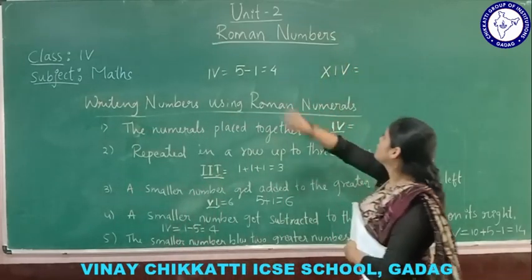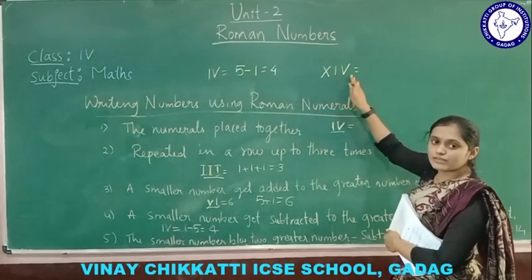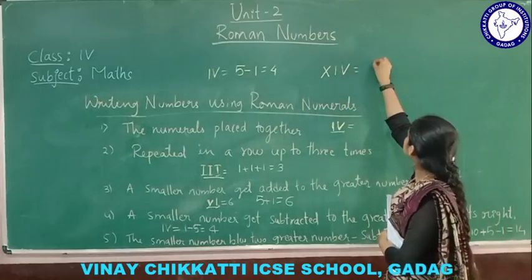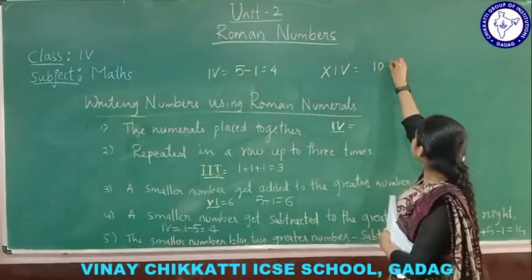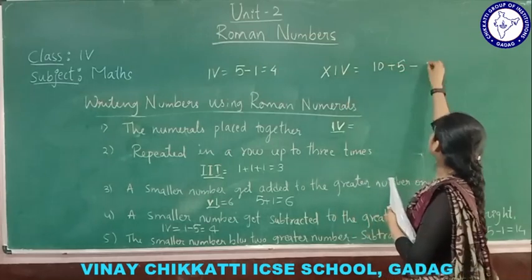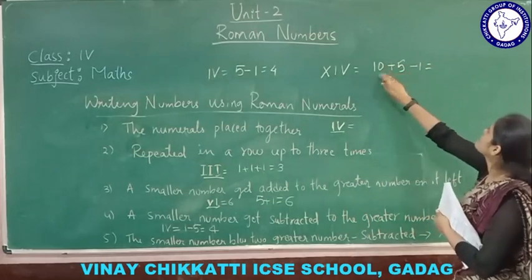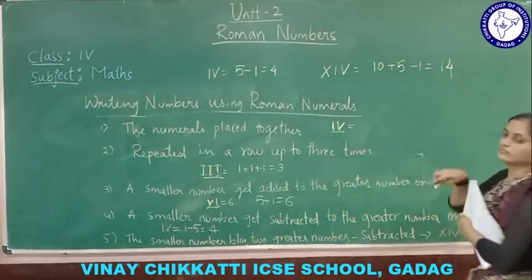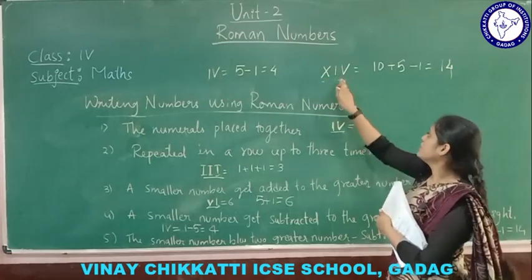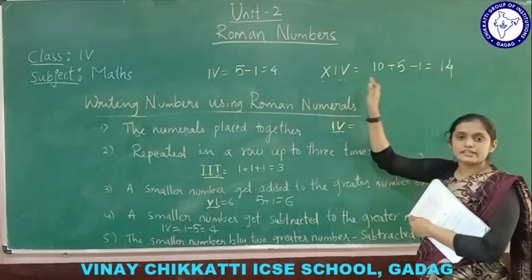At that time, follow the same procedure — the smaller number gets subtracted from the larger number on its right. For example: X is 10, then plus 5 minus 1 — that is 10 plus 5 minus 1 gives 14. Whenever a smaller number appears between two larger numbers, you have to subtract that number.